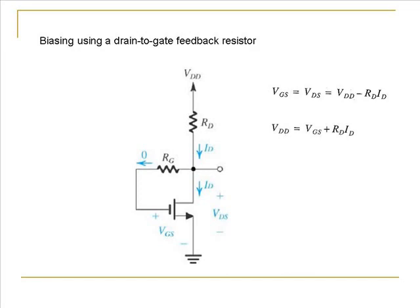We can manipulate the equation a little bit to get this equation where VDD which is a constant is equal to VGS plus RD into the drain current. This equation is very similar to the equation that we got in the previous case where the gate voltage which is a constant was equal to VGS plus RS into the drain current.